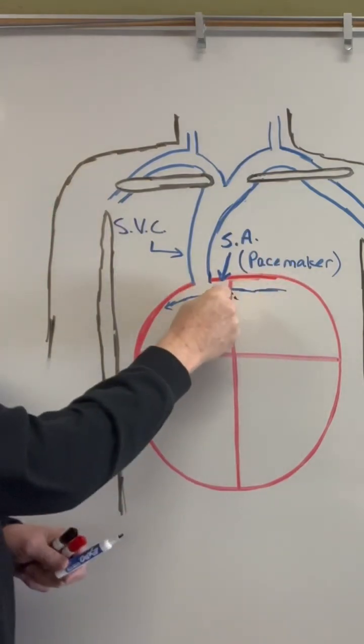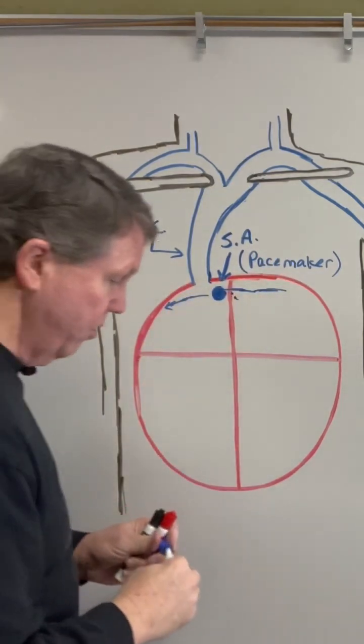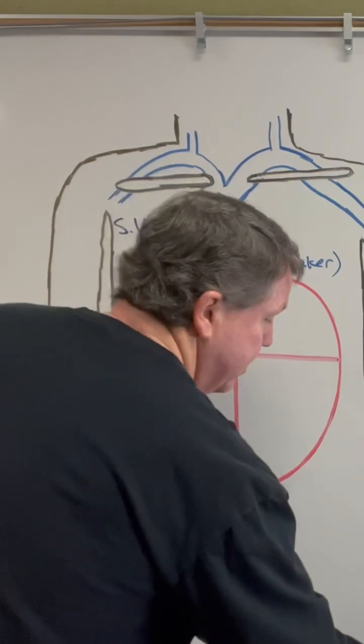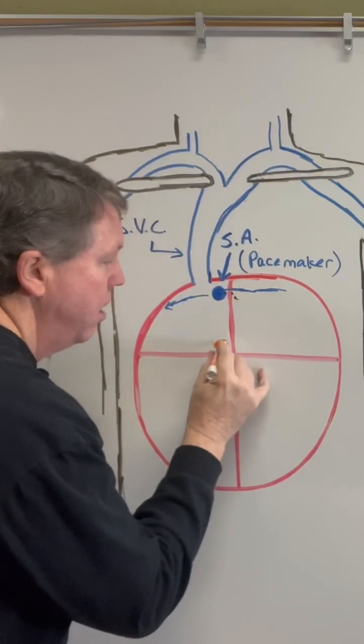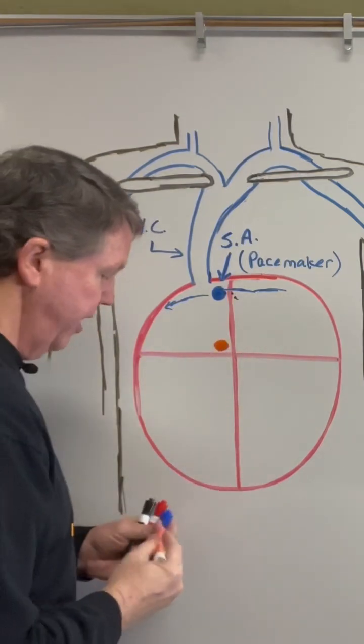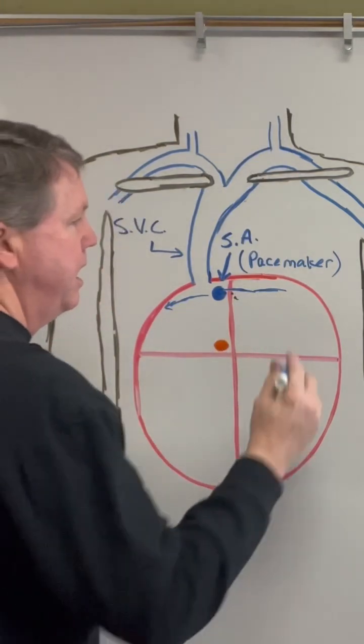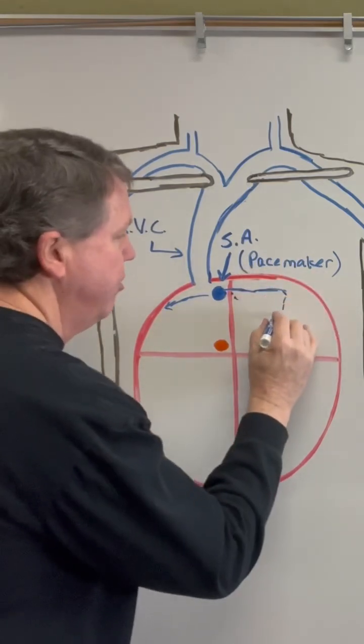The heart's going to contract. Eventually what's going to happen is those nerves are going to send an impulse so the atria contract, and eventually they're going to come down to this orange thing right here.